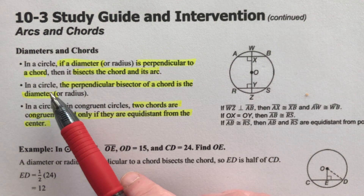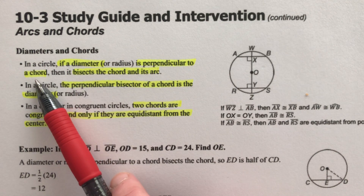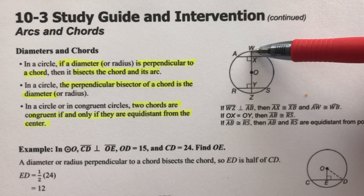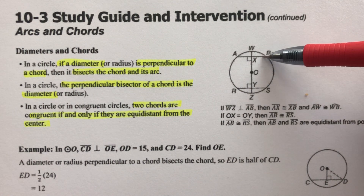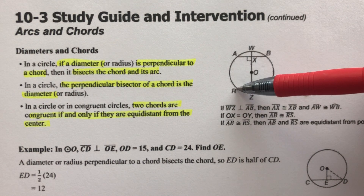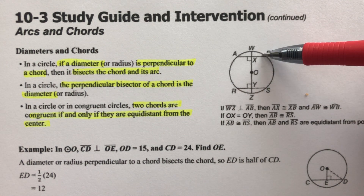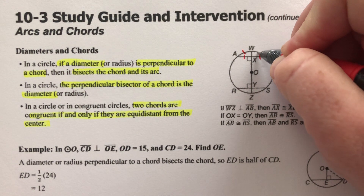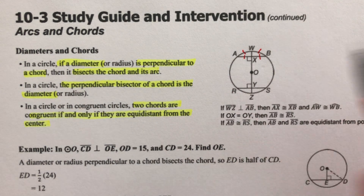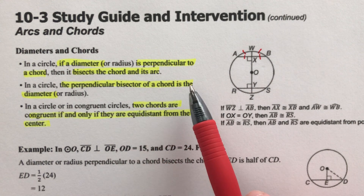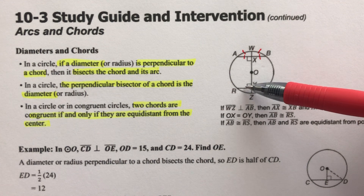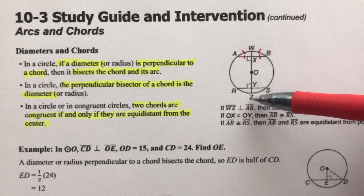Now we have a few things to add. In a circle, if a diameter is perpendicular to a chord, then it bisects the chord. Here we have diameter WZ going through the center, perpendicular to AB and RS. When the diameter is perpendicular to a chord, it cuts the chord in half and also cuts the arc in half. Conversely, the perpendicular bisector of a chord is the diameter — so if we know a line bisects the chord and arc, it must be the diameter.